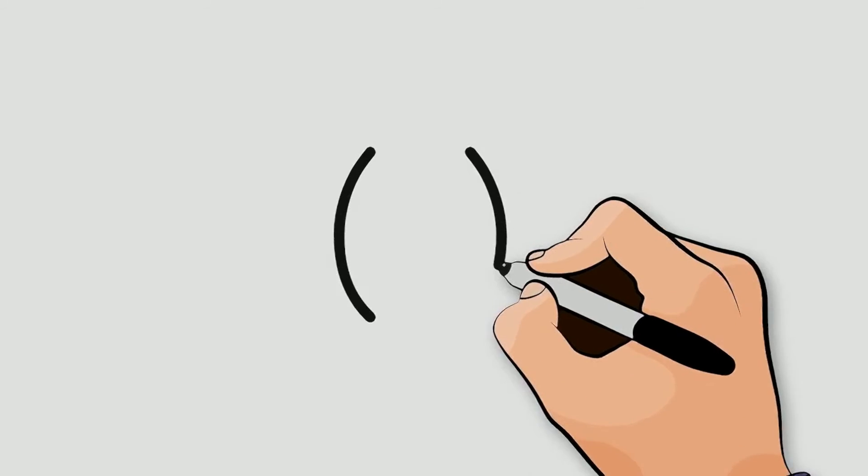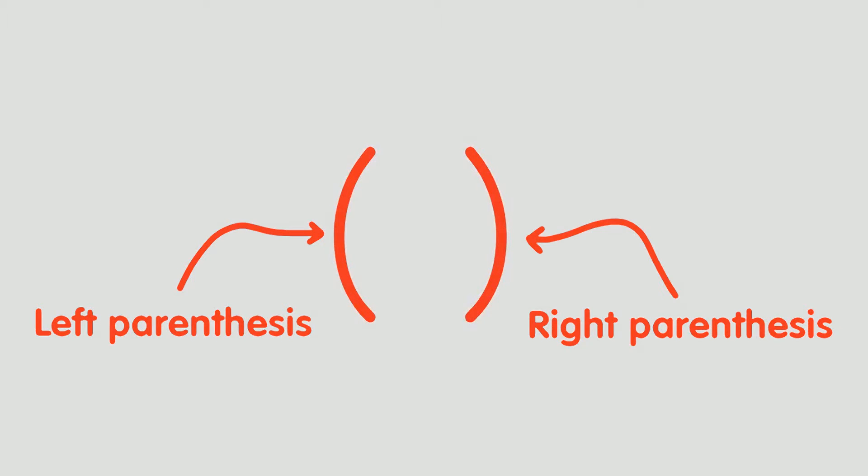This is how we write parentheses. On one side we have the left parenthesis. And on the other we have the right parenthesis. And together, we call them parentheses or round brackets.